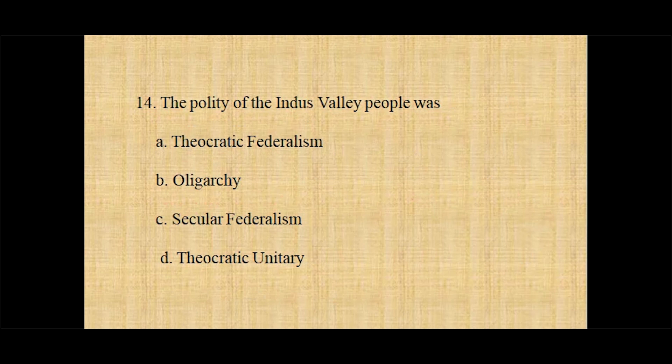Question number fourteen: The polity of the Indus Valley people was — option A theocratic federalism, option B oligarchy, option C secular federalism, option D theocratic unitary. And the correct answer is option A, theocratic federalism.